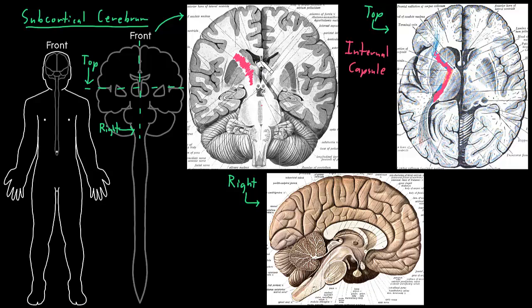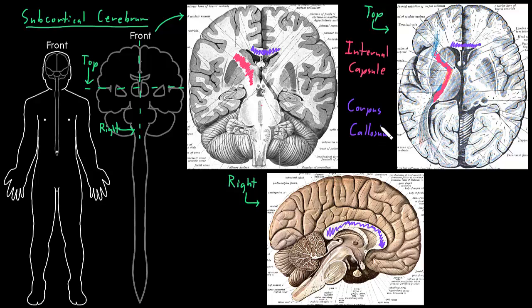Several white matter structures connect the two cerebral hemispheres. The biggest one is this big band of white matter connecting the right and the left cerebral hemisphere — you can see part of it in the top-down view as well. When we look at the view where we've split the two cerebral hemispheres, it's this big band of white matter right here. This important connection is called the corpus callosum. It allows information to travel from one cerebral hemisphere over to the other, and vice versa.